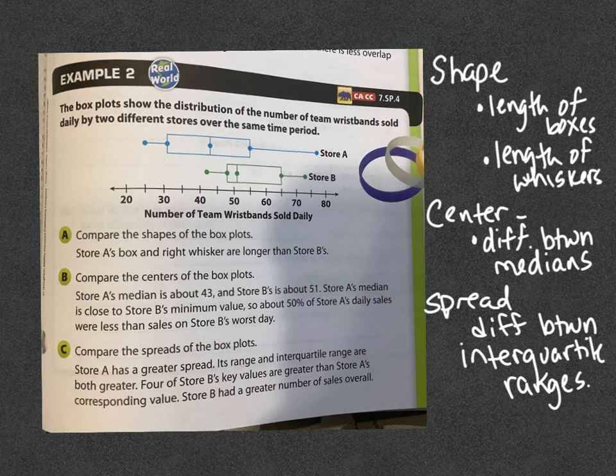So it's just evaluating what's happening there. Take a look at the shape, take a look at the center — the median — and take a look at the spread — the interquartile range. That's what this lesson is doing.